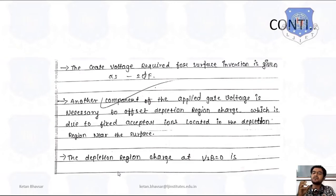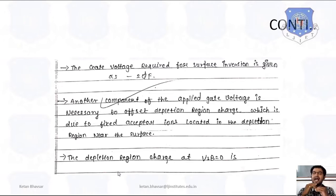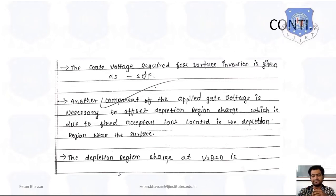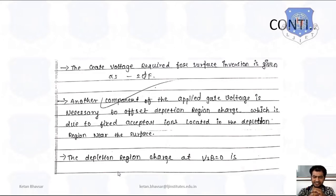The gate voltage required for surface inversion is −2φF. The reason is clear: after surface inversion, the holes near the surface are replaced by an electron layer. Because of this, the potential difference is negative, giving −2φF. Another component of the applied gate voltage is necessary to offset the depletion region charge, which is due to the fixed acceptor ions located in the depletion region near the surface.